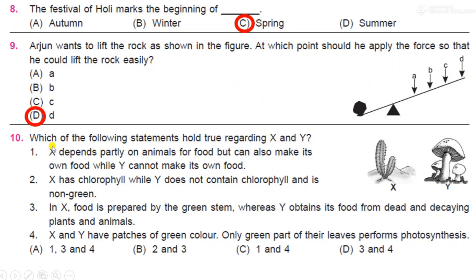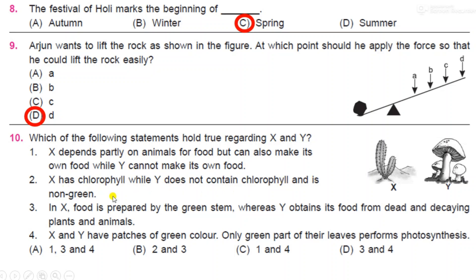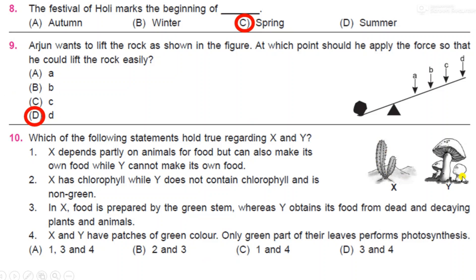Number 10: which of the following statements hold true regarding X and Y? This is X and this is Y. Option A: X depends partly on animals for food but can also make its own food while Y cannot make its own food. Option B: X has chlorophyll while Y does not contain chlorophyll and is non-green. Option C: In X, food is prepared by the green stem whereas Y obtains its food from dead and decaying plants and animals. Option D: X and Y have patches of green colour. Only green part of their leaves perform photosynthesis. So this is a cactus and this is fungi. Now which statement is true? The answer is B, two and three.